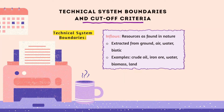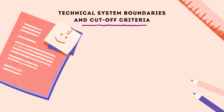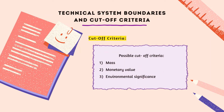Outflows include emissions to nature: emissions to air, water, and soil; and landfilling, which is considered problematic. Regarding cutoff criteria, there are three possible cutoff criteria: 1. Mass, 2. Monetary value, 3. Environmental significance.